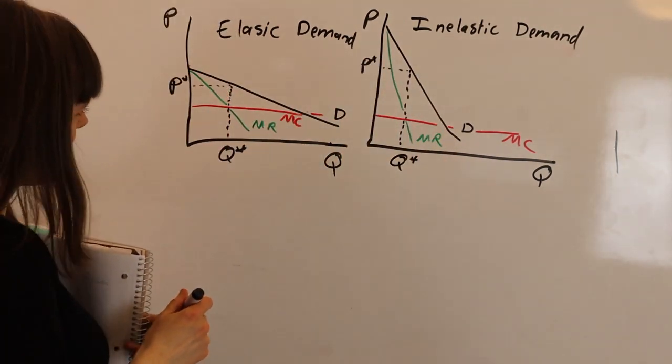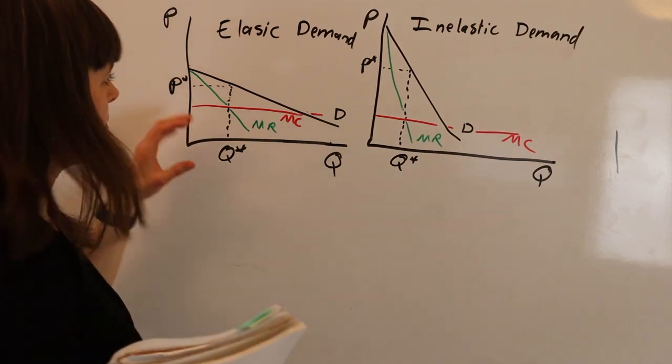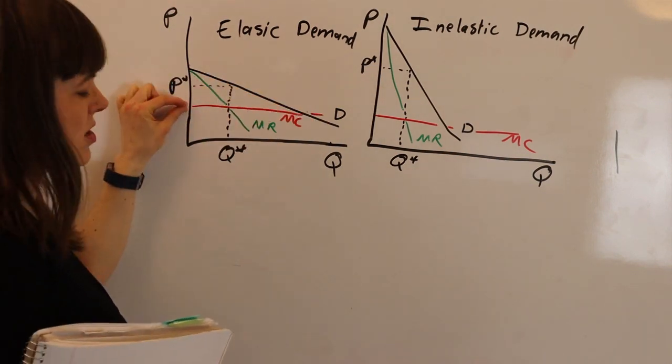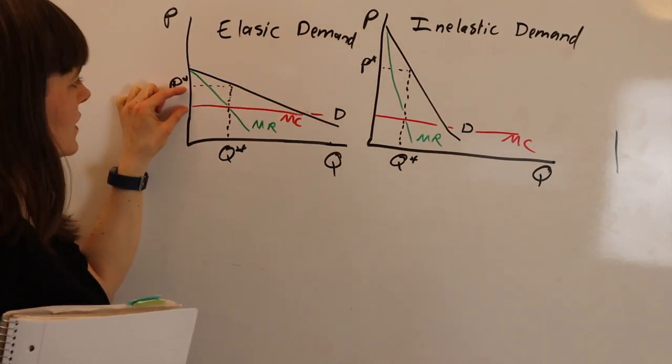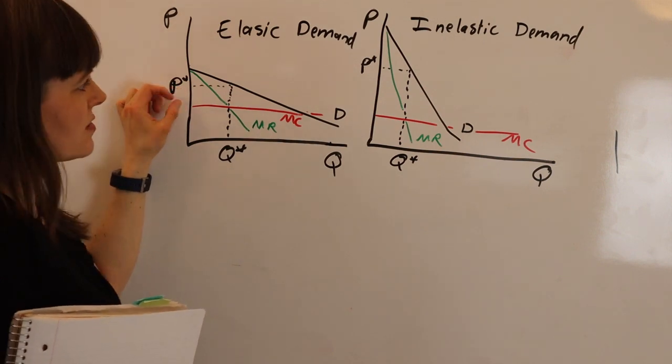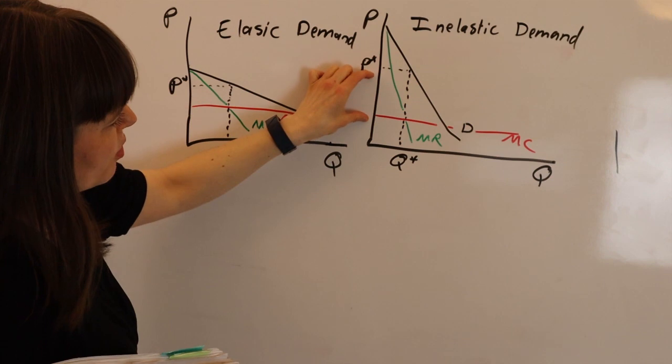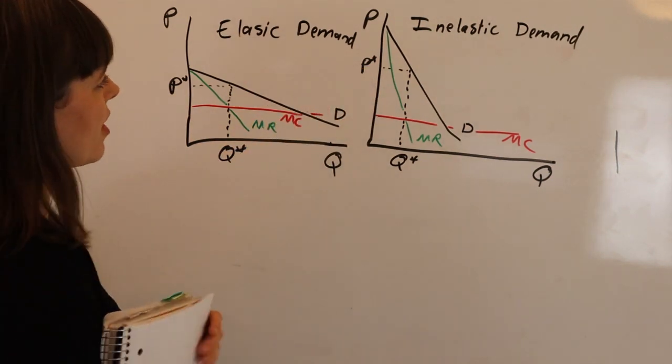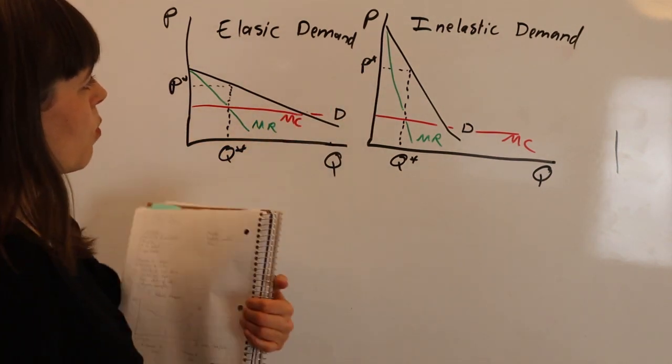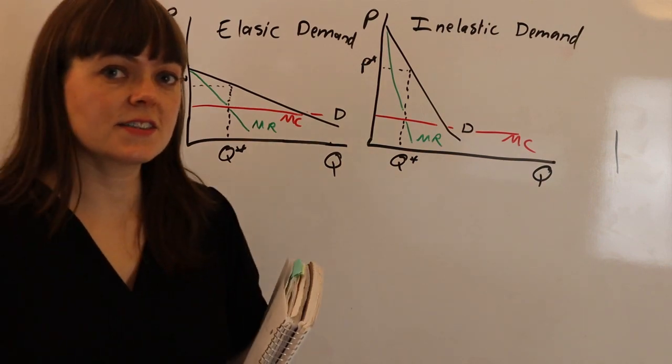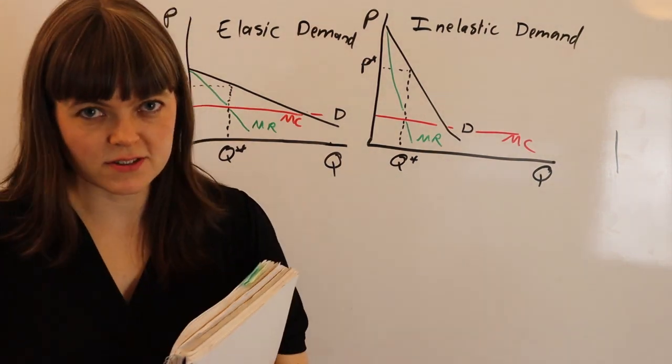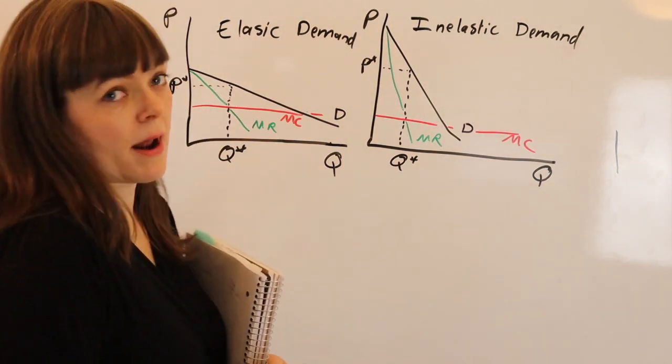Okay, so when you compare these, you see that the firm facing a very elastic demand function can markup price a little bit above marginal cost, whereas the firm with the really inelastic demand function can markup price a lot over marginal cost. And so the elasticity of demand is going to make a huge difference when it comes to Monopoly's profits.